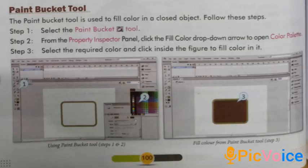Paint Bucket Tool: The paint bucket tool is used to fill color in a closed object. Follow these steps. Step 1, select the paint bucket tool. Step 2, from the Property Inspector panel click the fill color drop-down arrow to open the color palette. Step 3, select the required color and click inside the figure to fill color in it.